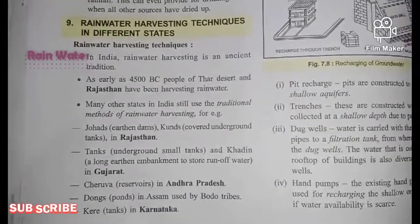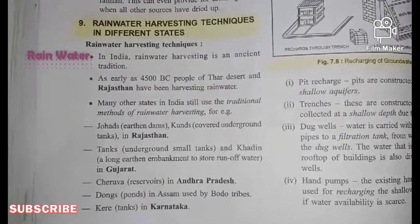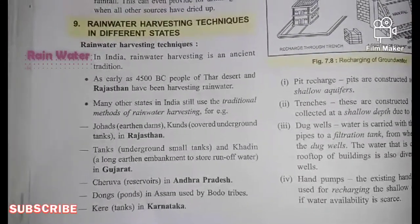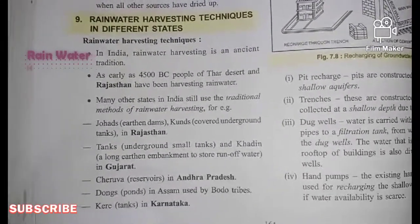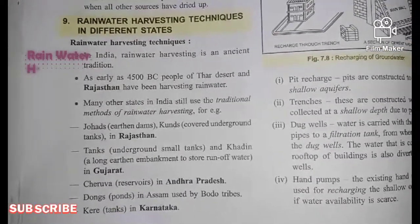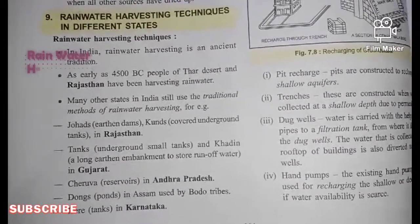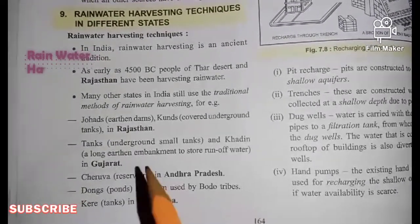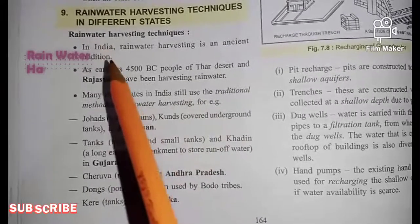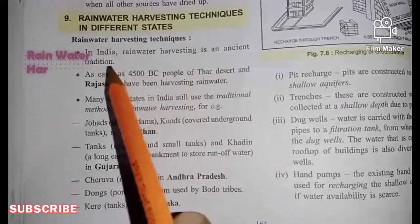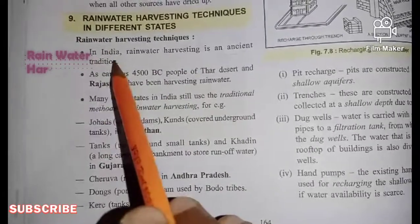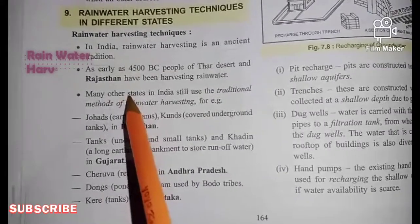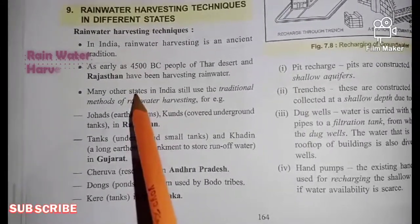Though rainwater harvesting is the best technique, this technique is not applied in the same manner in every state. Different states follow different methods of rainwater harvesting. Take a look at the methods the different states use in India. Rainwater harvesting is an ancient tradition, and according to that tradition there were different techniques that people tried to use.